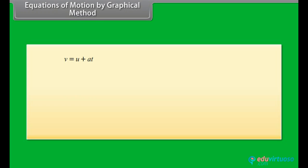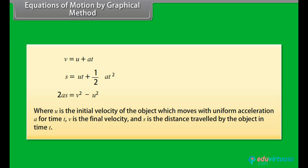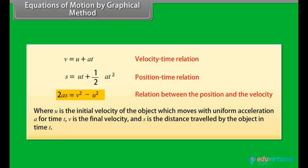Equations of motion by graphical method. The three equations of motion are: V = U + AT; S = UT + (1/2)AT²; and 2AS = V² - U². Where U is the initial velocity, A is the uniform acceleration, T is the time, V is the final velocity, and S is the distance travelled. The first equation describes the velocity-time relation, the second represents the position-time relation, and the third represents the relation between position and velocity.